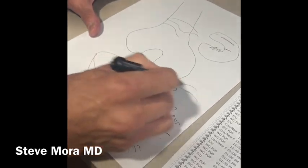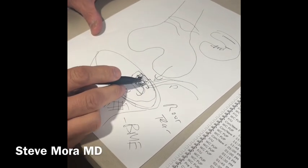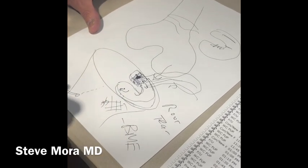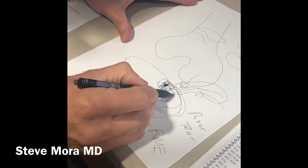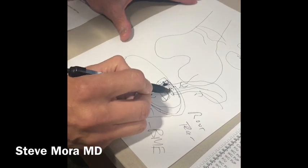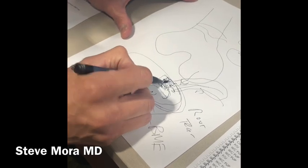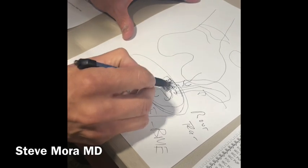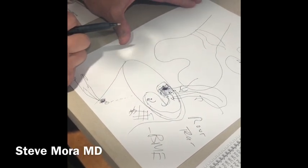We attach some sutures onto the posterior horn that's torn, and then we pass those sutures into the hole, out this hole, and then we pull really hard, and when you do that, it actually reduces the torn posterior horn into this bony bleeding bed, and then you tie a knot over here in a special way, and eventually this spot welds itself, and that's called root tear repair of the medial meniscus.